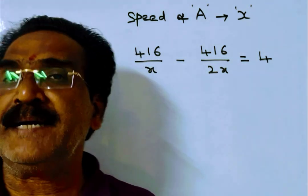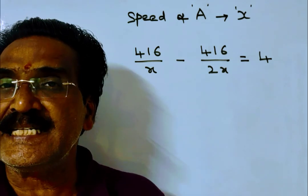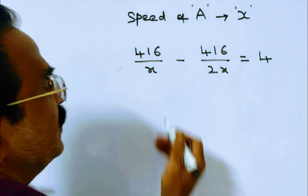So the time gained by train A when the speed is doubled is 4 hours, friends.